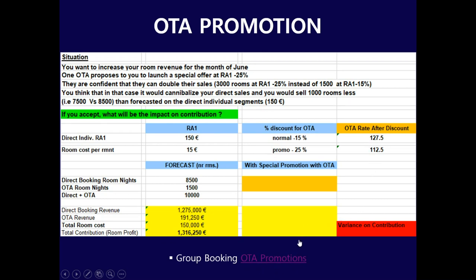To summarize the situation: you usually sell at 150 euro direct. This OTA normally gets a 15% discount, giving a rate of 127.5 euro. They are now requesting a 25% discount, which would reduce the OTA rate from 127.5 to 112.5 euro. Variable cost to clean one room is 15 euro per room. What would be the impact on contribution if you accept the proposal? Please pause and calculate.